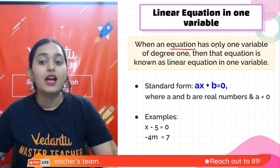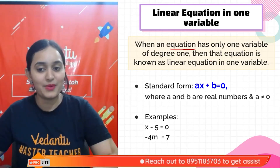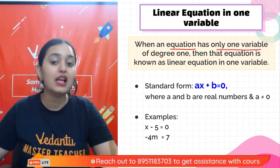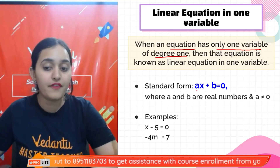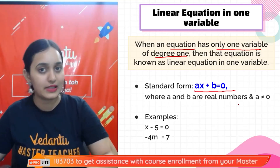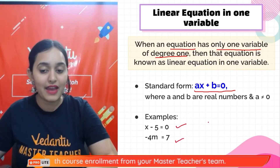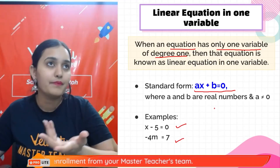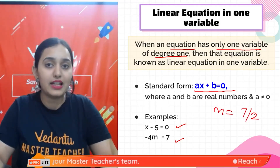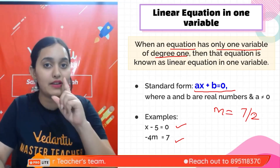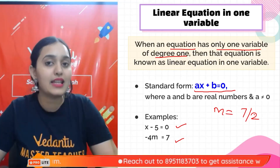The standard form of a linear equation in one variable is ax + b = 0. It has only one variable and the degree of that variable is one. For example, x − 5 = 0, or −4m = 7, or m = 7/2 — any equation where we have only one variable with power one.